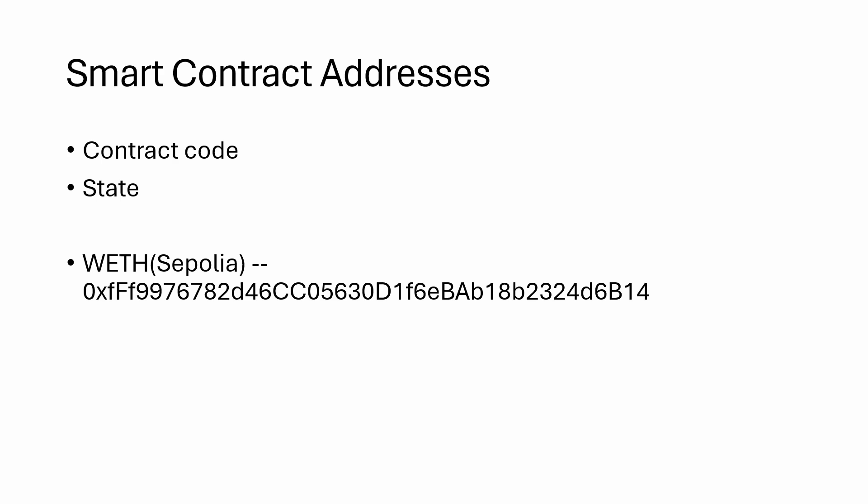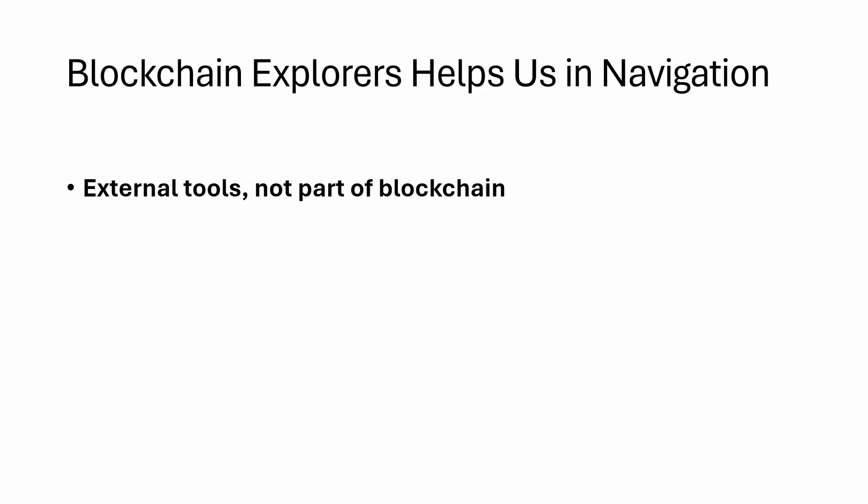The program we will be referring to is a Wrapped Ether contract. It actually converts the ether we give to another format — the ERC20 format known as WETH. That is the address we are going to refer to. The method we are going to follow to explore these addresses is using blockchain explorers, which are external tools that are not part of the blockchain.